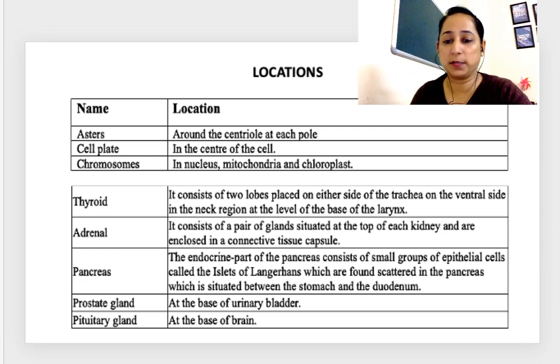Starting with the first one from the chapter cell division: asters, location around the centriole at each pole. Cell plate, in the center of the cell. Chromosomes, in the nucleus, mitochondria and chloroplast.